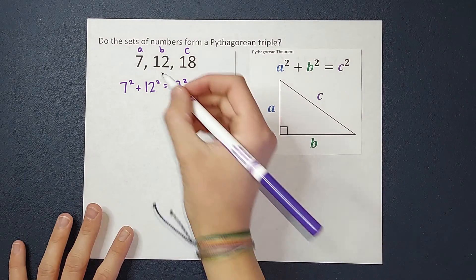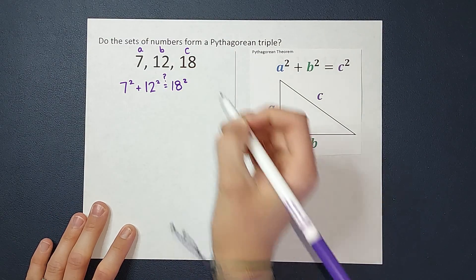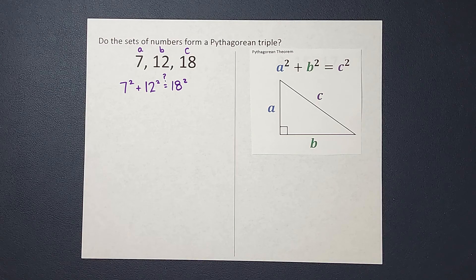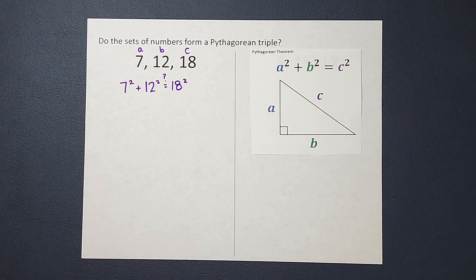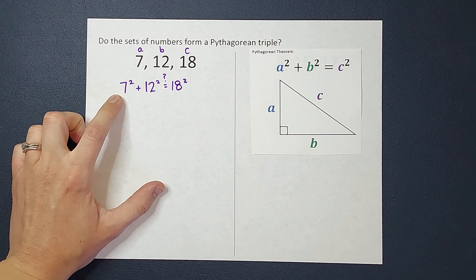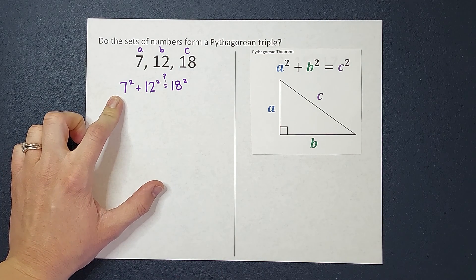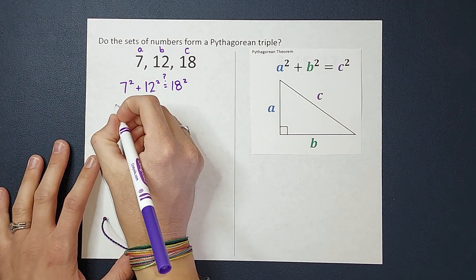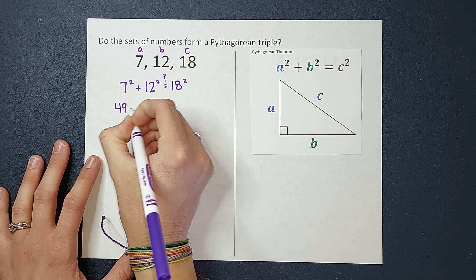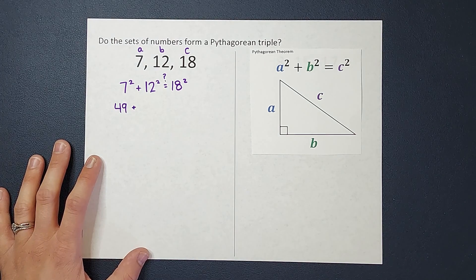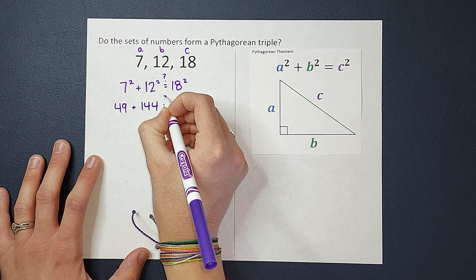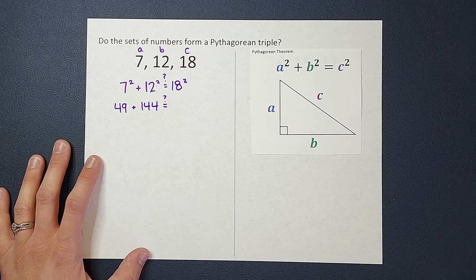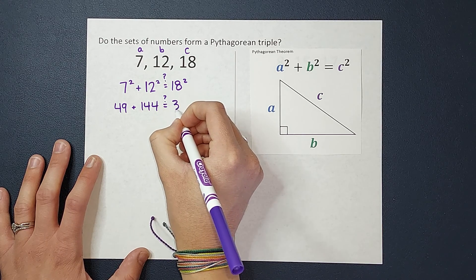Now I have this set as equal, but I'm really wondering if they're equal, right? So I like to set a little question mark there because I don't know yet if they're equal. That's what I'm checking for. Let's go ahead and simplify this down further. So I've got 7 squared. That's 7 times 7, which gives me 49, plus 12 squared, which gives me 144.